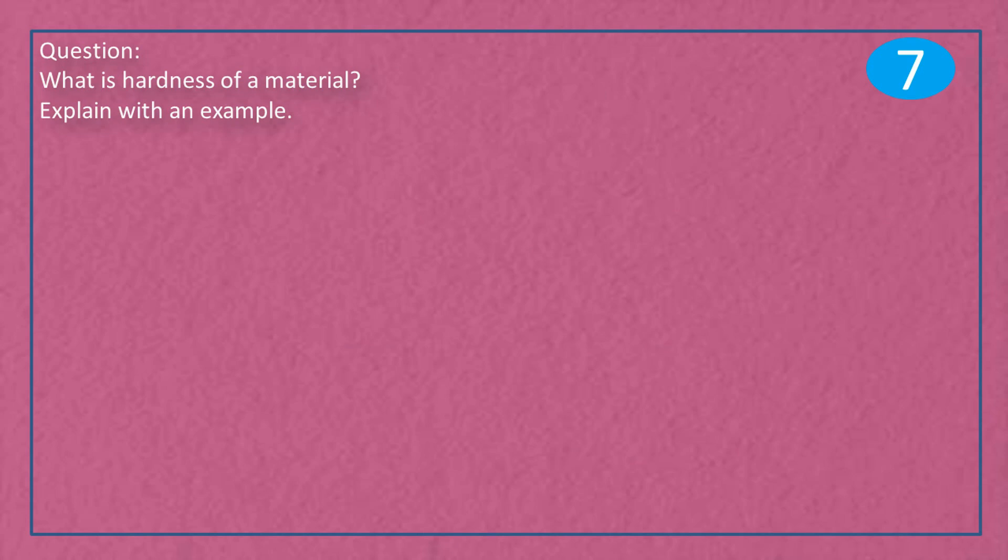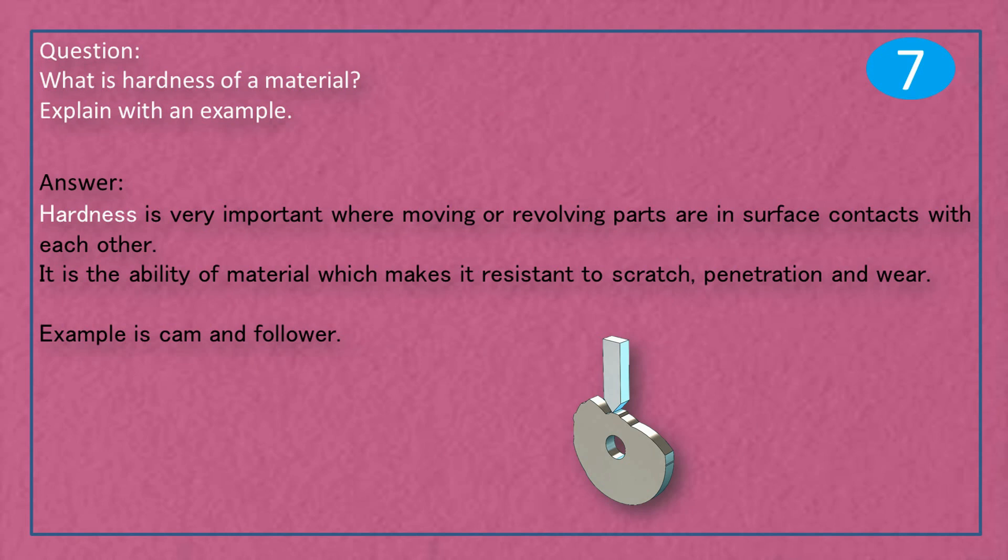Question: What is hardness of a material? Explain with an example. Answer: Hardness is very important where moving or revolving parts are in surface contacts with each other. It is the ability of material which makes it resistant to scratch, penetration and wear. Example is cam and follower.